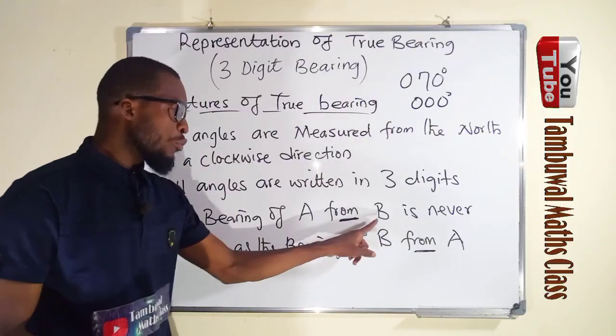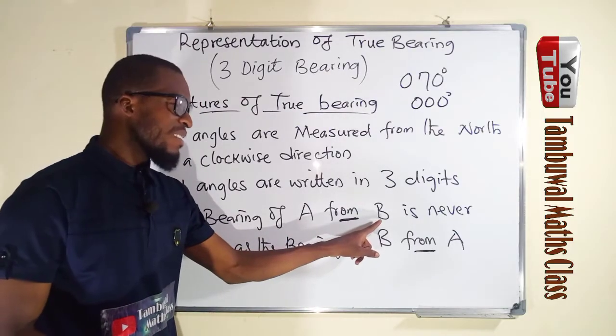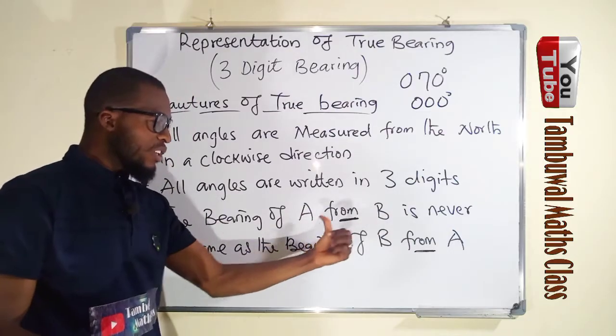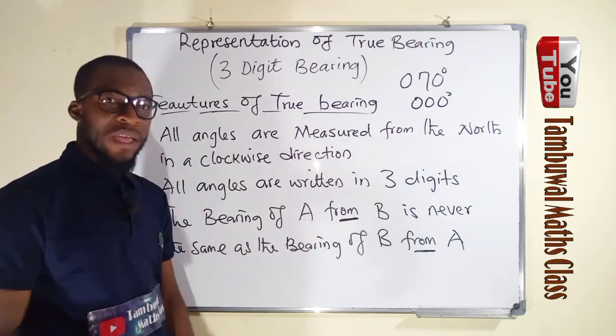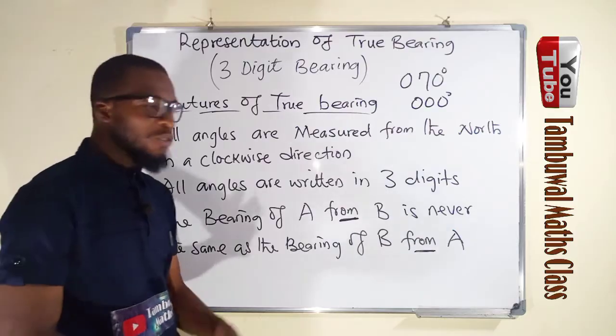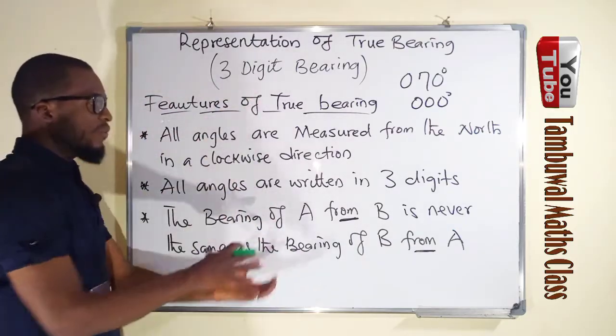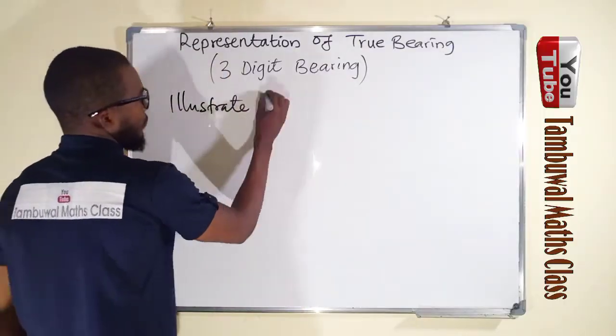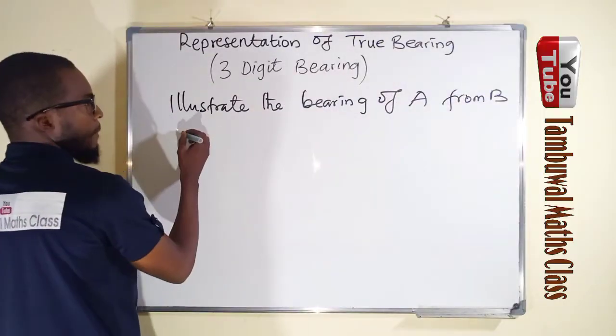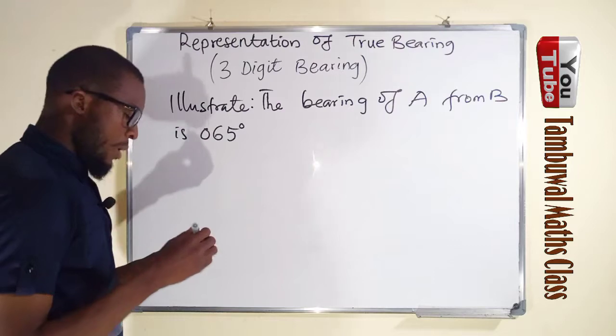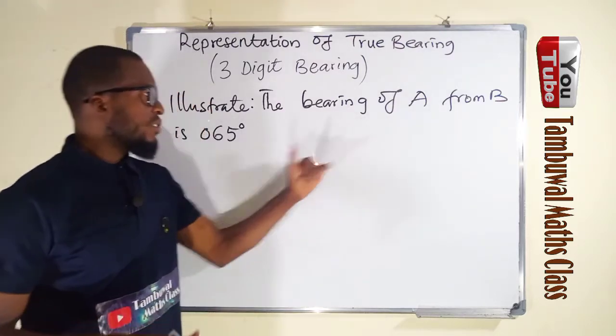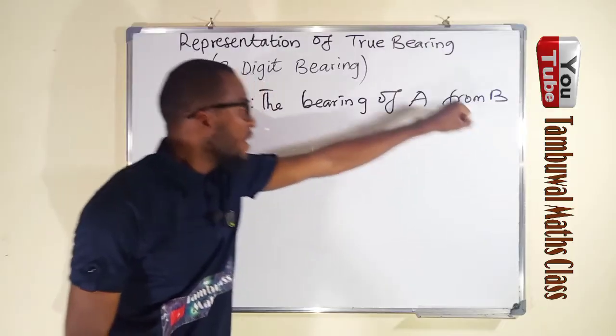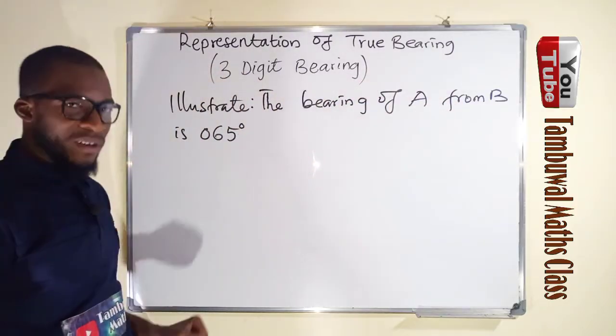So the bearing of A from B, it means that it is that angle which is measured from B leading to the direction of A. So let us illustrate this information.